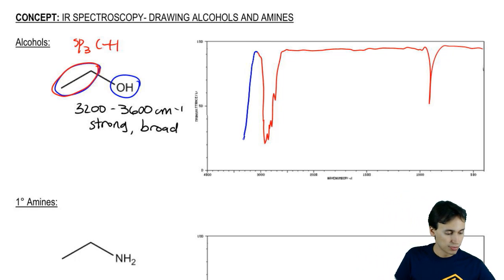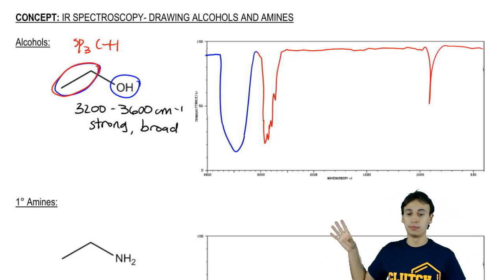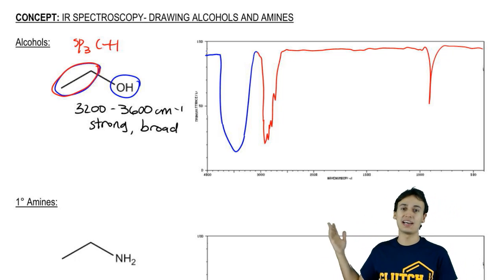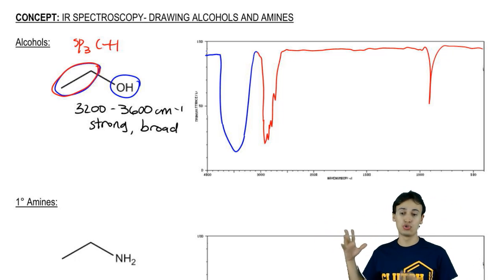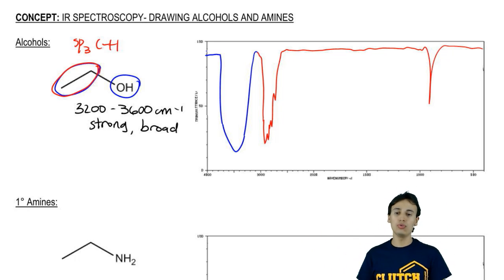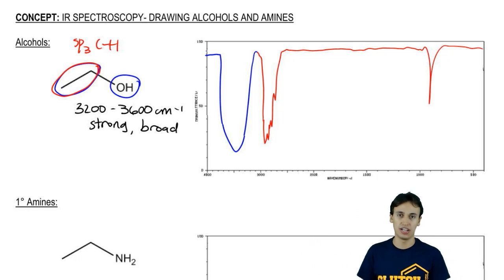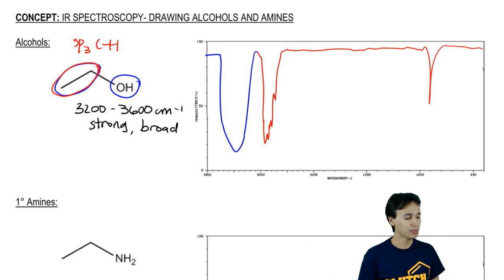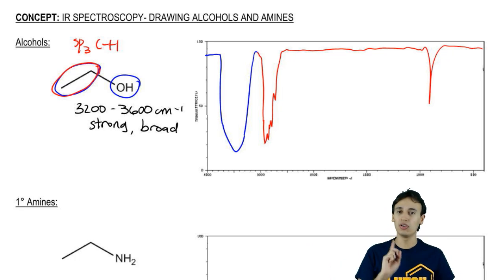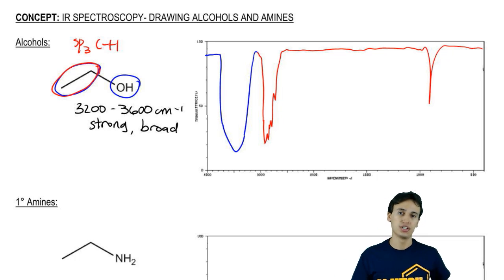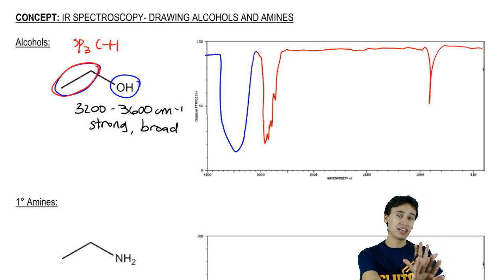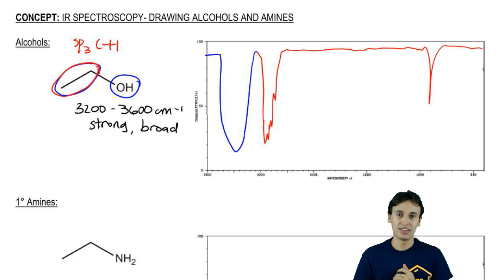This alcohol peak is going to be huge. Now in this spectrum I actually went past 3,600, so I drew it a little bit too big, but it's not a big deal. The whole point is that it's a huge massive peak that takes up pretty much the entire 3,000 region. That can actually make it challenging because alcohols are so large in terms of their absorption that they tend to block out things that are behind them.